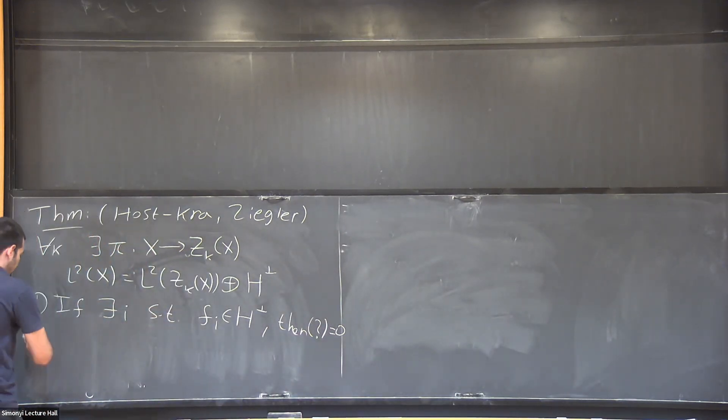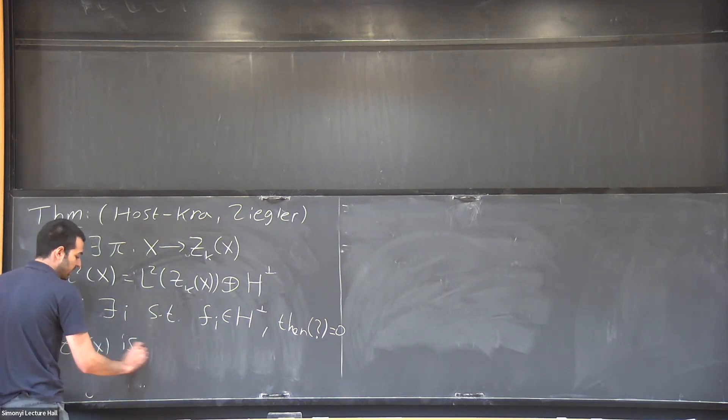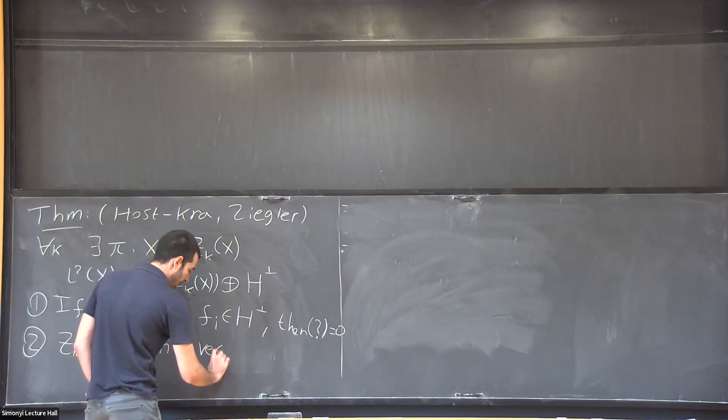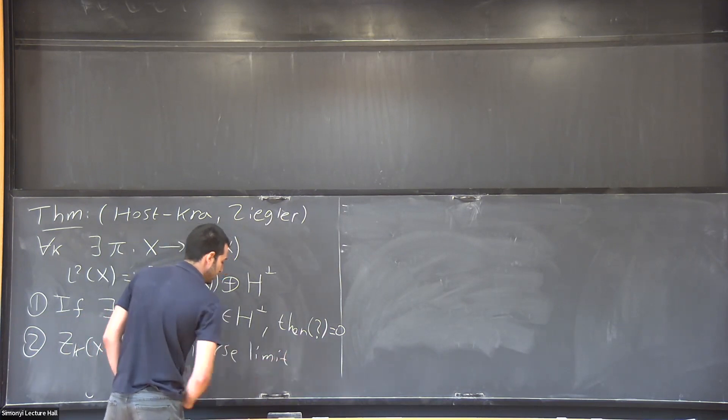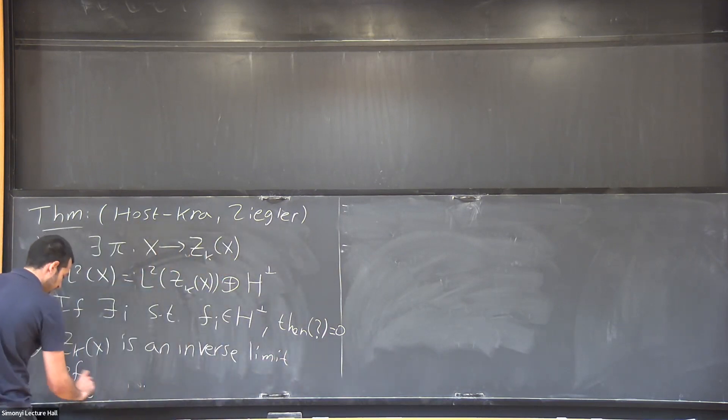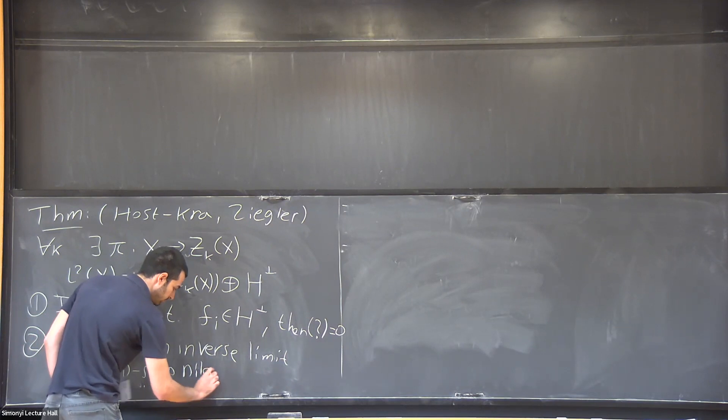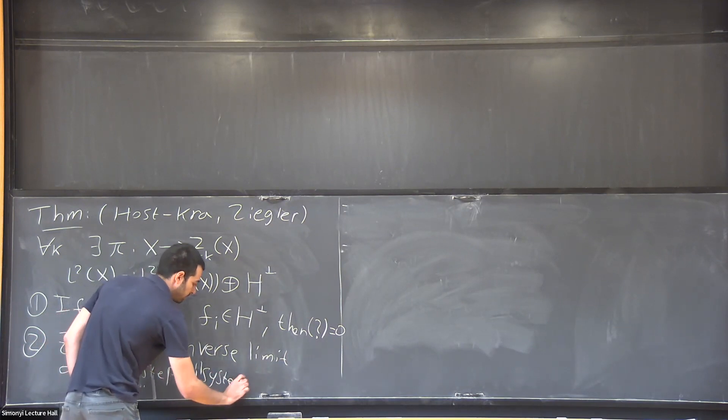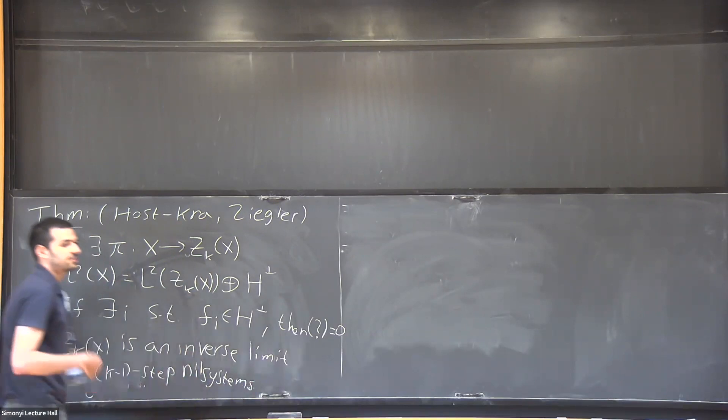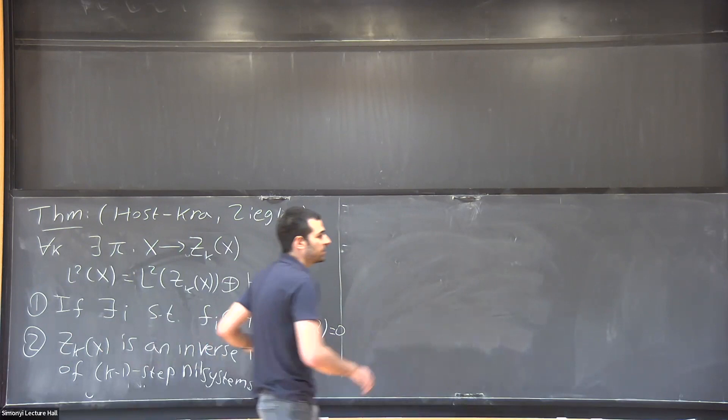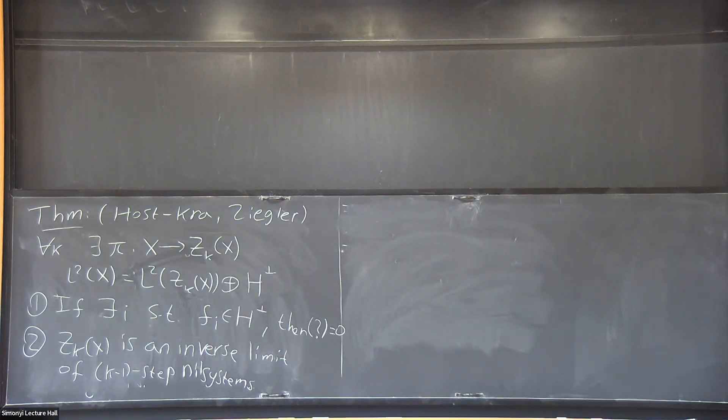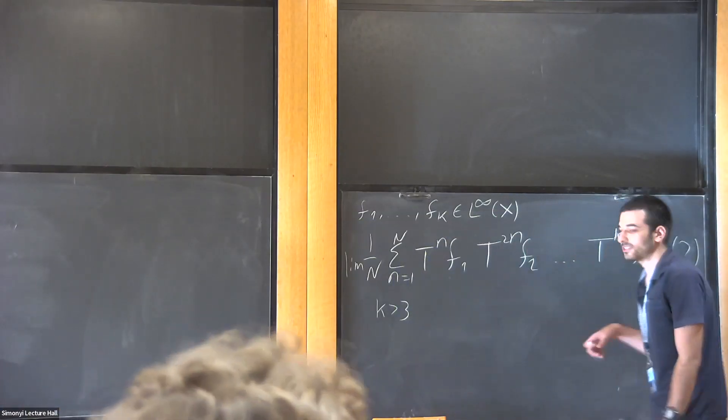And the second property, they classify this very important factor, showing that in this category, Z_k(X) is an inverse limit, so we can approximate it of some very nice systems called, in this case, k minus 1 step nilsystems. And we should think about nilsystems as very, very structured and very simple systems, because on these systems, it is very easy to prove the convergence, even pointwise convergence, and give a limit formula.